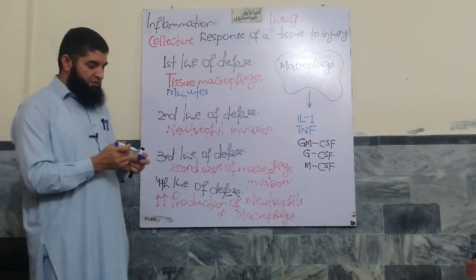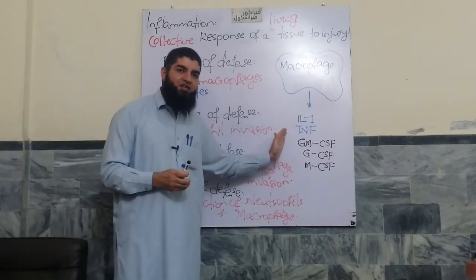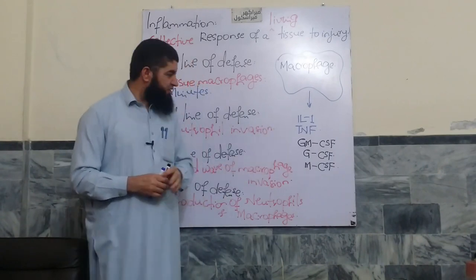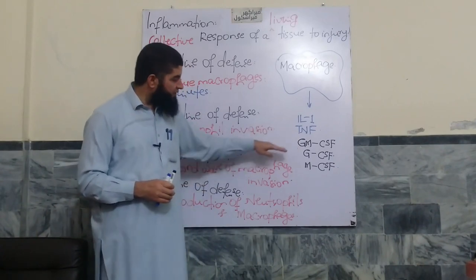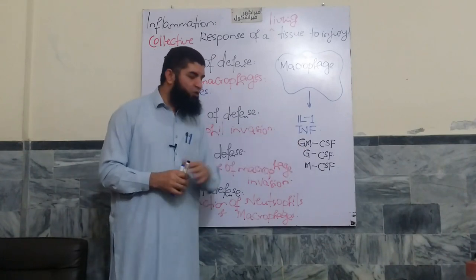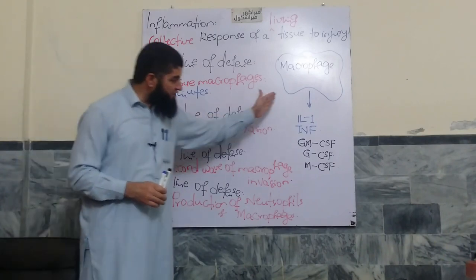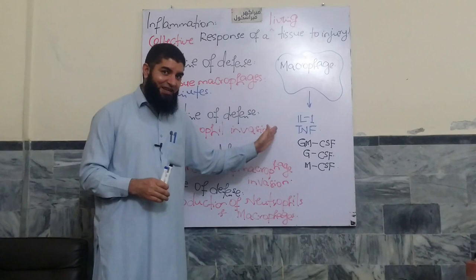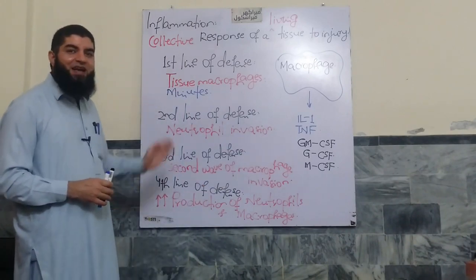At the same time, macrophages elaborate a variety of chemical mediators including interleukin-1, tumor necrosis factor, granulocyte-monocyte colony-stimulating factor, granulocyte colony-stimulating factor, and monocyte colony-stimulating factor. We will discuss the role of those individual chemical mediators in greater detail later.